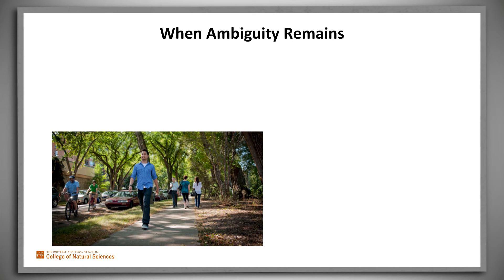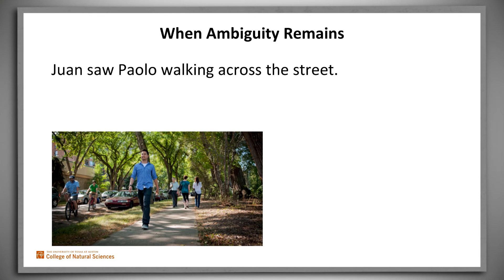By the way, to see why it's so important that logical languages be unambiguous, consider: 'Juan saw Paolo walking across the street. He waved.' Even with all the knowledge that we bring to the table, this sentence is ambiguous — 'he' could be either Juan or Paolo; either of them could have waved.